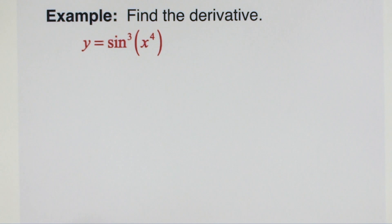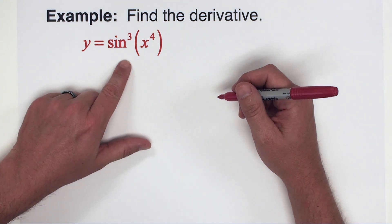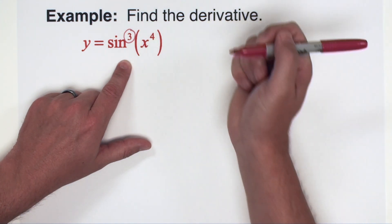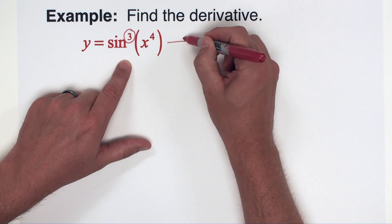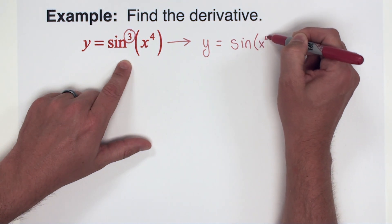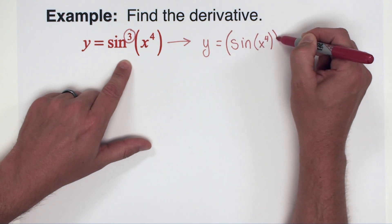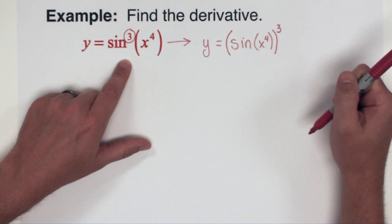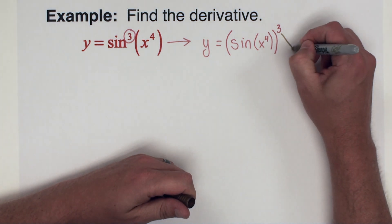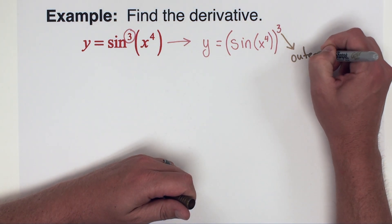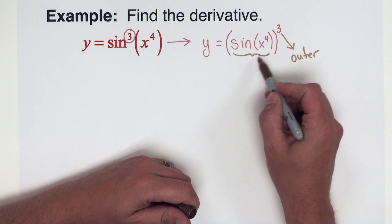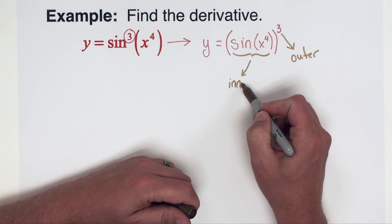Our first problem: we want to find the derivative of sine cubed of x to the fourth. We've seen problems like this before where we have the trig function raised to a power, and my recommendation is that you rewrite this. This is the same as sine of x to the fourth, all raised to the third power. When I rewrite it that way, I know that the third power is the outer function, making the sine of x to the fourth the inner function.